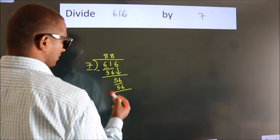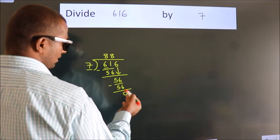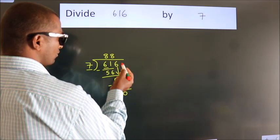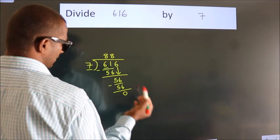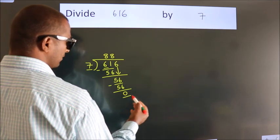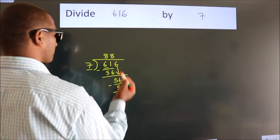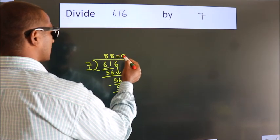Now we subtract and get 0. After this, no more numbers to bring down, and we got remainder 0. So this is our quotient. Let's do it again. Thank you.